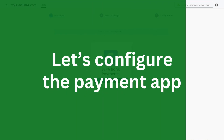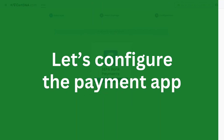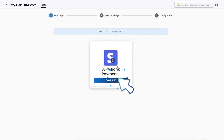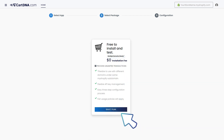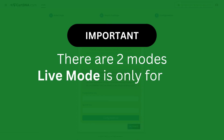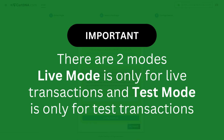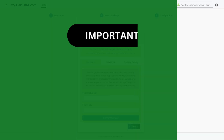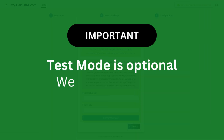You will be redirected to the app configuration portal. Let's configure the payment app. Click on the continue button to go to the next step, then click on the select plan button.